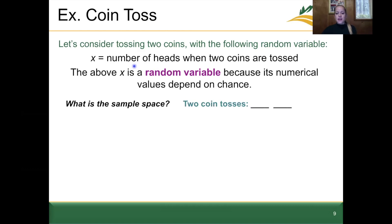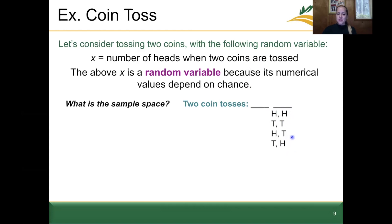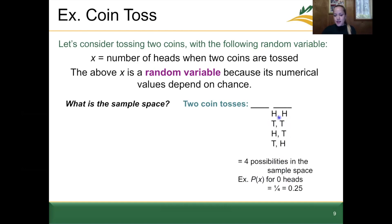Let's talk through the sample space. The first coin toss and second coin toss give us: heads-heads, heads-tails, tails-heads, or tails-tails — all the different possibilities when two coins are tossed, giving us four total possibilities. For example, the probability of getting zero heads when tossing two coins corresponds to the tails-tails option, which is one option out of four. So that probability is one-fourth, or 0.25.